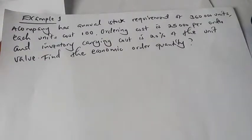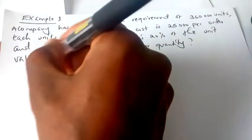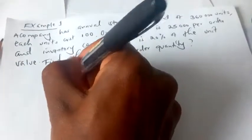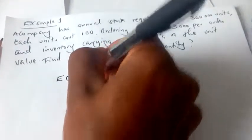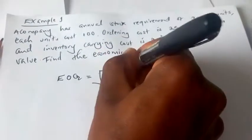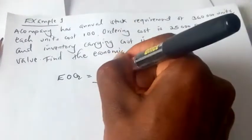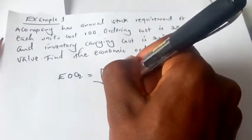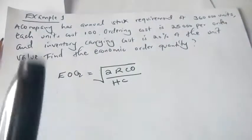So note the six assumptions which are assumed when trying to find the economic order quantity. We have the formula of how to get the economic order quantity. Economic order quantity is equal to the square root of 2RCO over HC.